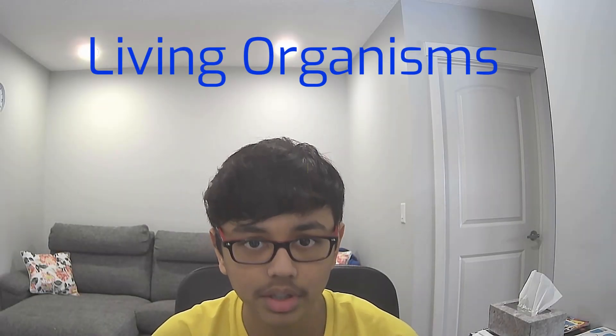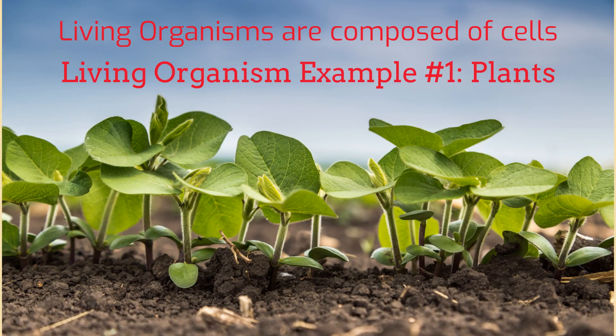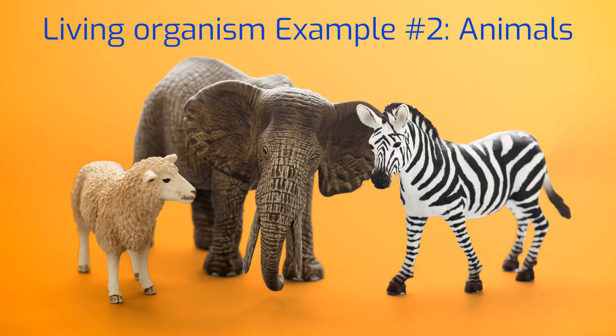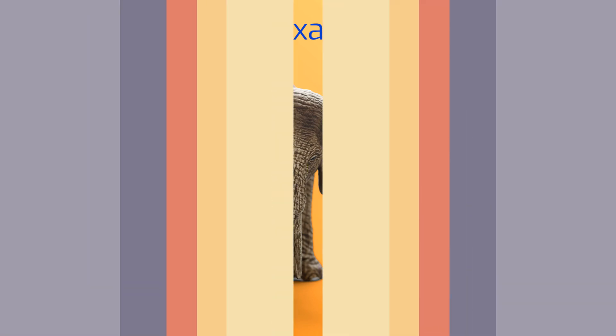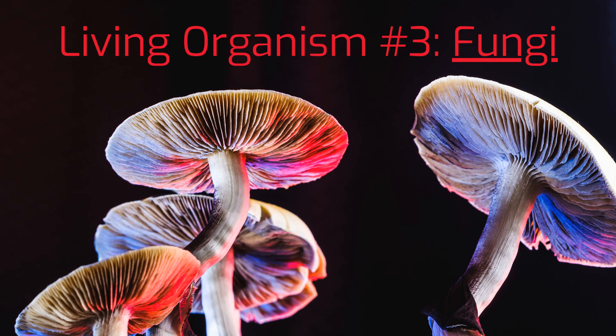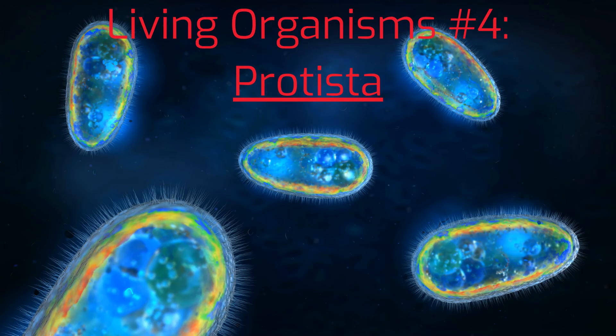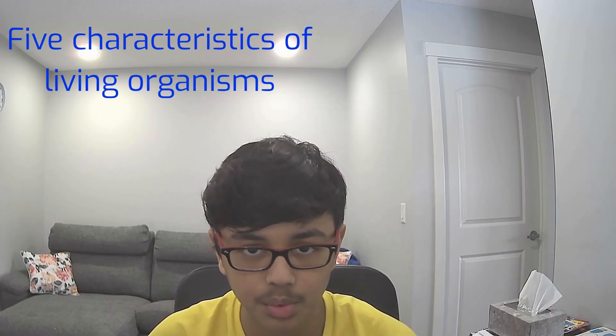Hey everyone, and in this video I'll be talking about living organisms. Each living organism has five characteristics which makes it living, and those five characteristics are energy, environment, reproduction, growth, and waste. Throughout the video I'll be talking about all five of these different characteristics and going in detail. If you have any further questions, feel free to drop a comment down below. Let's get started with the first one.